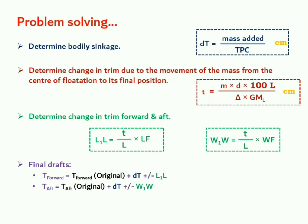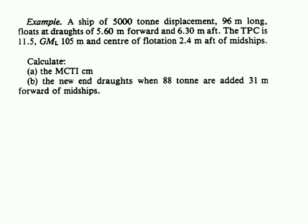Now let's say we are having this example. A ship of 5000 ton displacement, 96 meter long, floats at drafts of 5.6 meter forward and 6.3 meter aft. The TPC is 11.5 ton, GM longitudinal is 105 meters and centre of flotation 2.4 meter aft of midship. We will have to first determine the MCT by 1 cm and then the new end drafts when 88 ton are added 31 meter forward of midship.